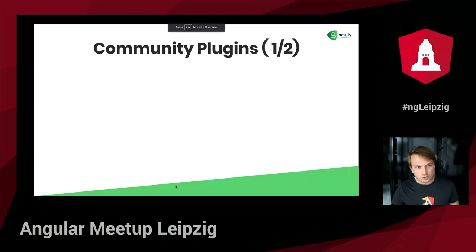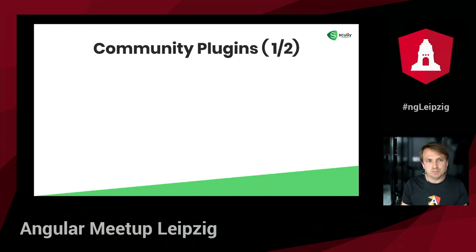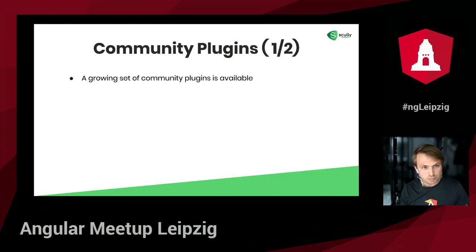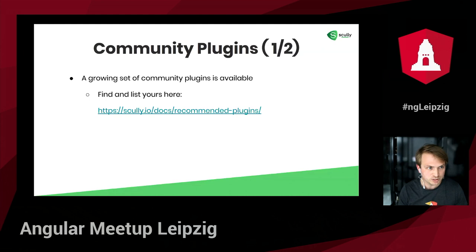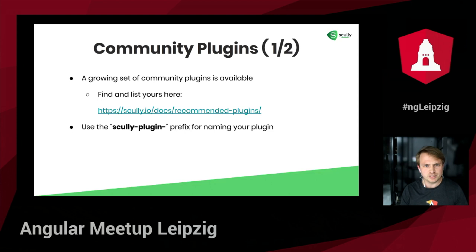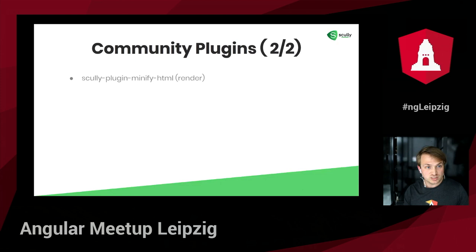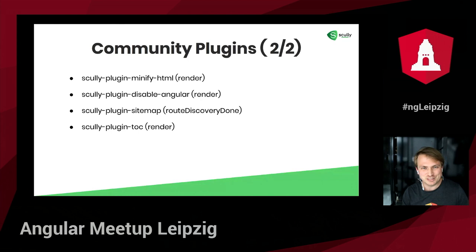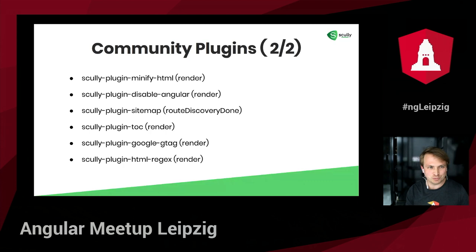Back to the presentation. You probably noticed that the power of Scully lies within its plugin system, and eventually it will be the community that makes this tool grow. A growing set of community plugins is becoming available — you can find and list yours at the recommended plugin page on the Scully website. If you create a plugin, it's advisable to use the `scully-plugin-` prefix for naming, which makes it easily discoverable and creates a uniform naming convention. Available community plugins include the minify HTML and the disable Angular render plugins, among others.